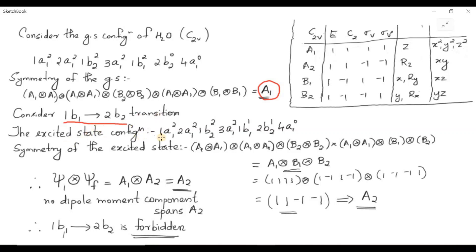The excited state configuration for the 1B1 to 2B2 transition can be written as (1A1)²(2A1)²(1B2)²(3A1)²(1B1)¹(2B2)¹. We can find the symmetry of the excited state by finding the direct products: A1·A1·A1·A1·B2·B2·A1·A1, and finally only one electron each in 1B1 and 2B2, giving B1·B2.